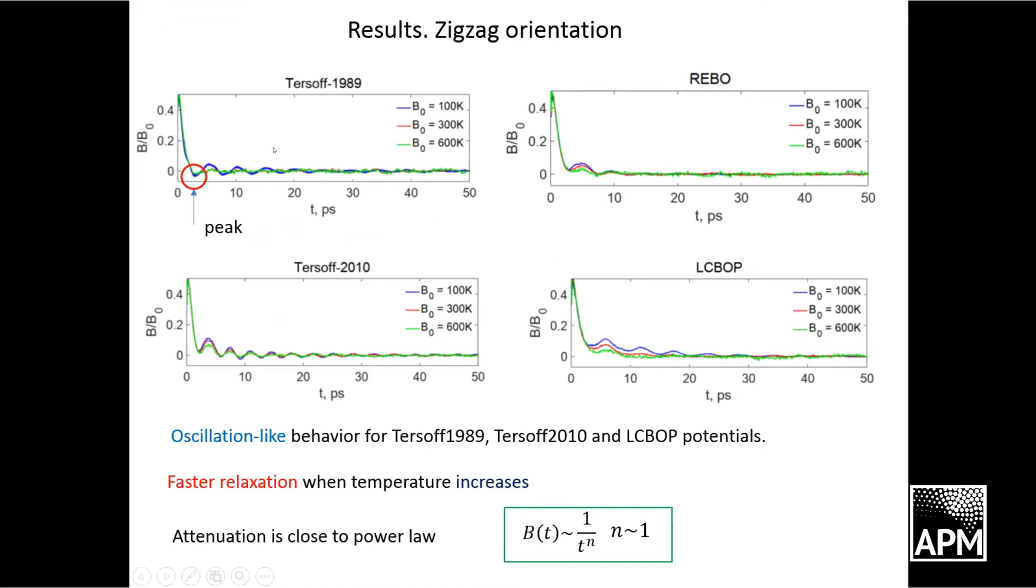Here are the results for zigzag orientation. We see that almost for each potential we use, there is some oscillation-like behavior. It is non-monotonous with oscillations. The property of Tersoff 1989 potential is that it has a peak here, which we cannot see for all the other potentials.